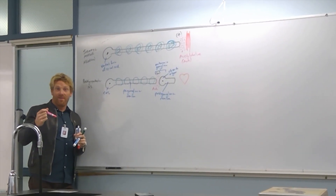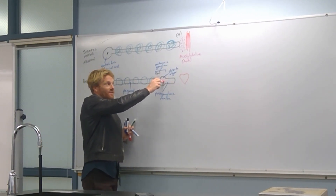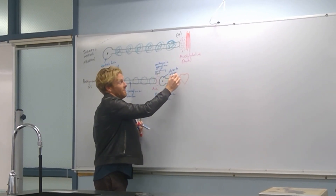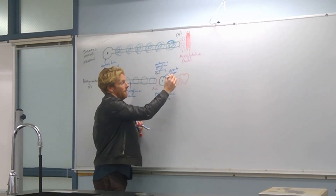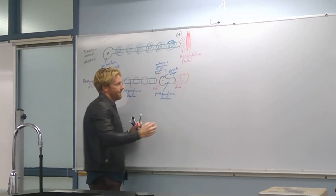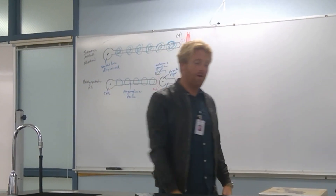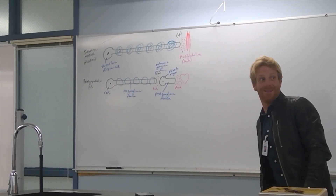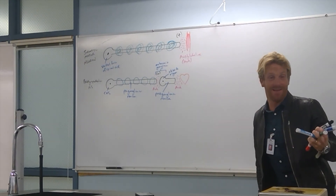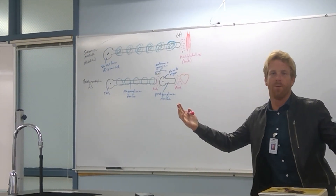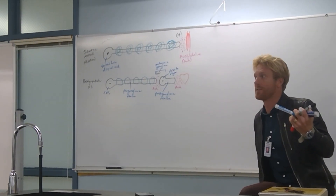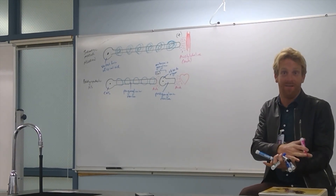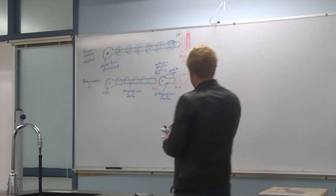Then the postganglionic neuron fires, and the action potential travels the short distance down its axon. More acetylcholine is released onto the target organ. In the case of the heart, does it stimulate or inhibit? It inhibits — the parasympathetic nervous system slows the heart down and tells it not to beat as hard.